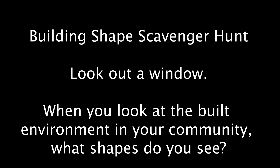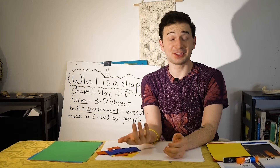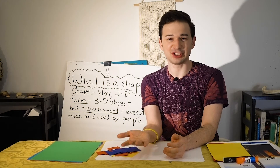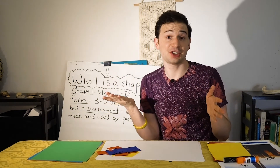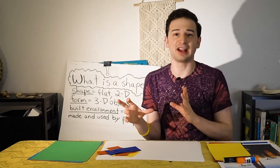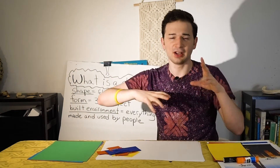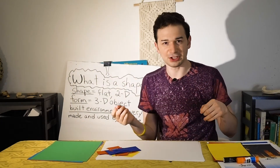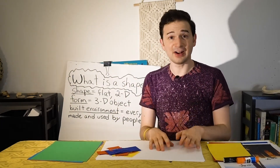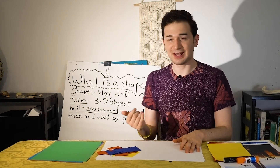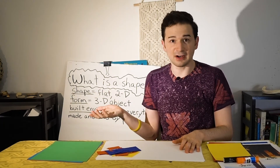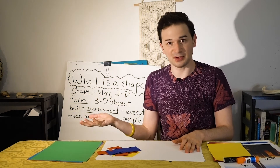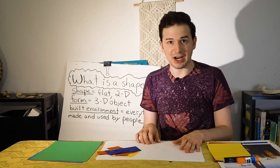Now let's go back to the video for our last activity. Were you able to find any shapes when you looked at the built environment outside? Did you see geometric shapes made of straight, even lines and angles, or curved, irregular-looking organic shapes? For our final activity, you are going to make a picture of a built environment — a community or neighborhood — using shapes.